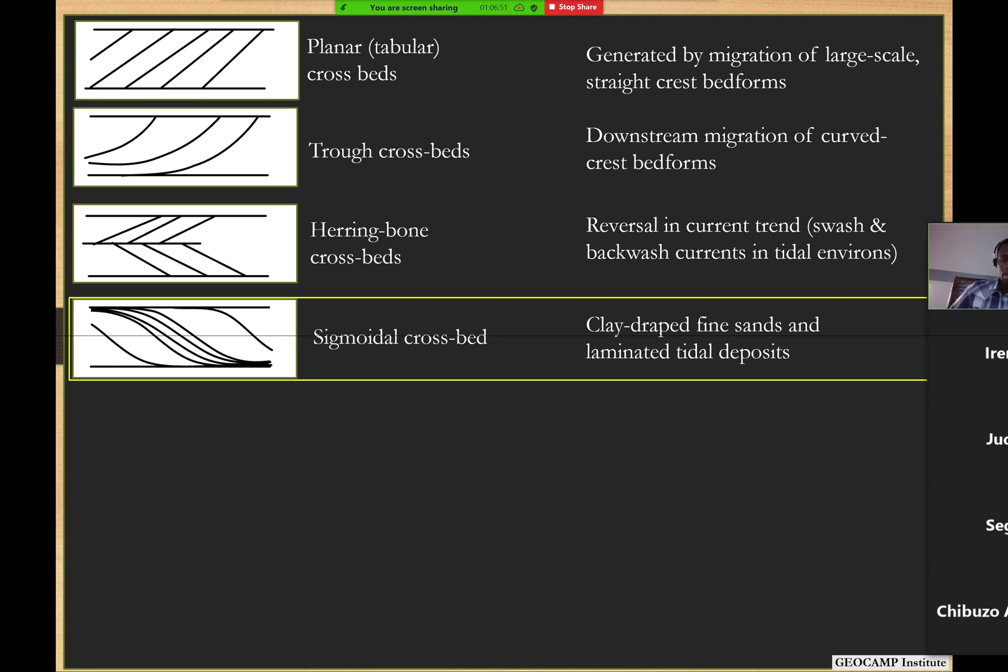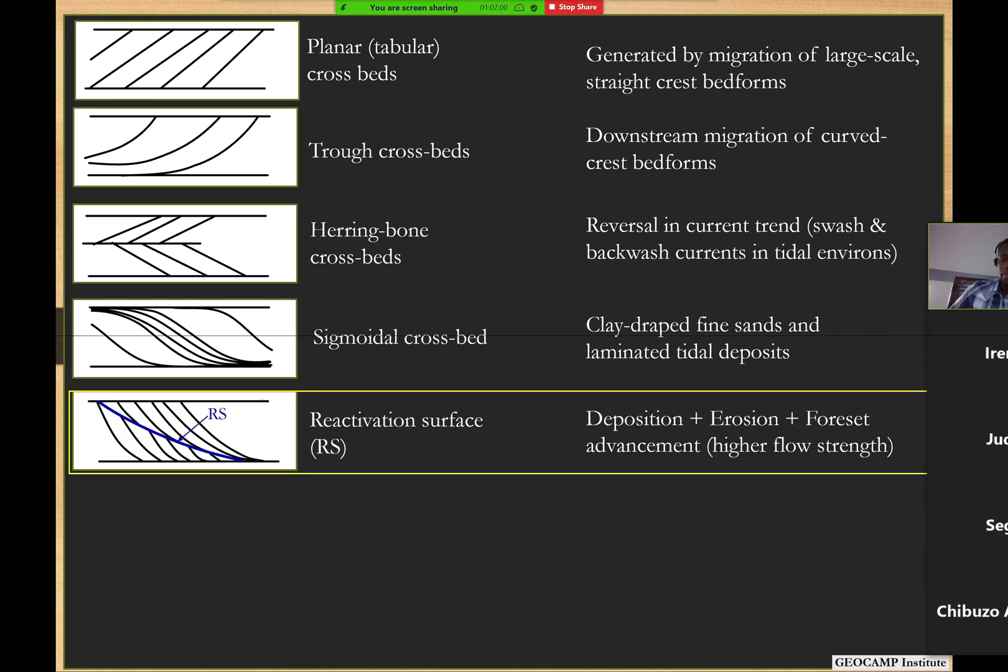There are other crossbeds called sigmoidal crossbeds. I showed an example earlier, and these are just different variations of crossbed systems depending on the tidal conditions in those environments, whether you're going from the neap spring to the neap tidal cycle to the spring tidal cycle, and whether you have both cycles preserved in that area.